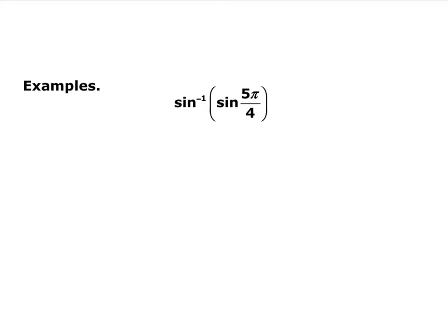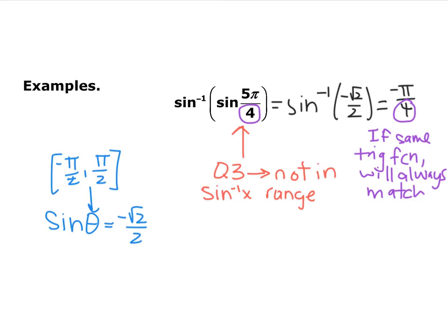This example — sine inverse of the sine of 5π/4 — is similar to a 6.1 question, so go ahead and pause and try it. The answer is negative π/4. Since 5π/4 is in quadrant 3, which is not in the range of sine inverse, you can't just cancel and say 5π/4. So the sine of 5π/4 is negative √2/2, and sine inverse of negative √2/2 asks: where does sine equal negative √2/2 between −π/2 and π/2? That gives negative π/4.